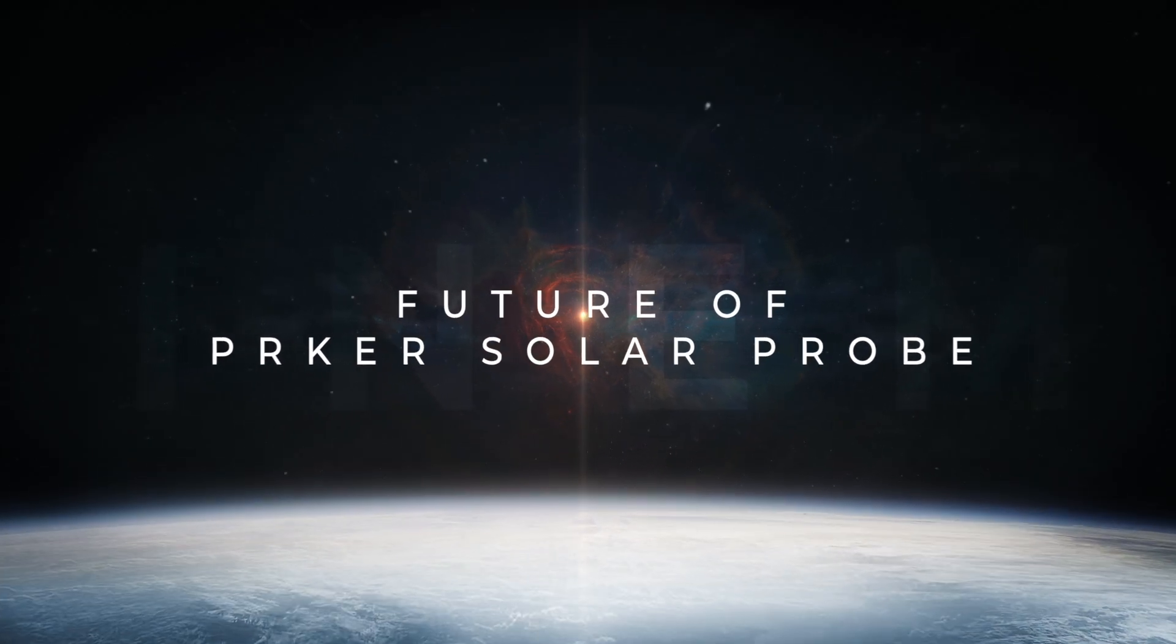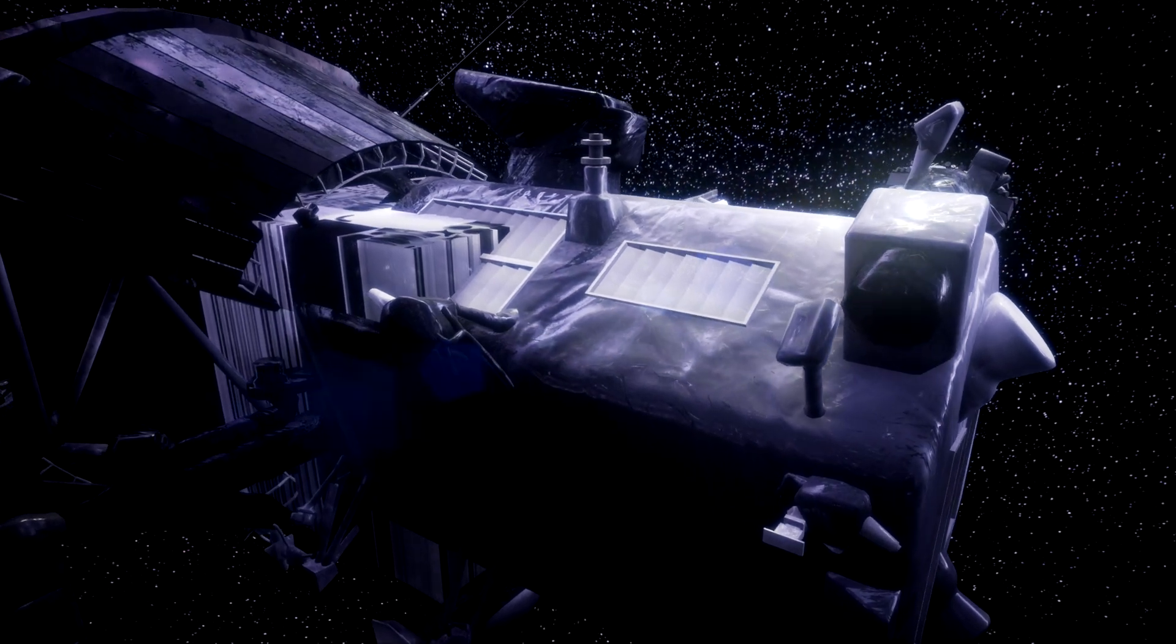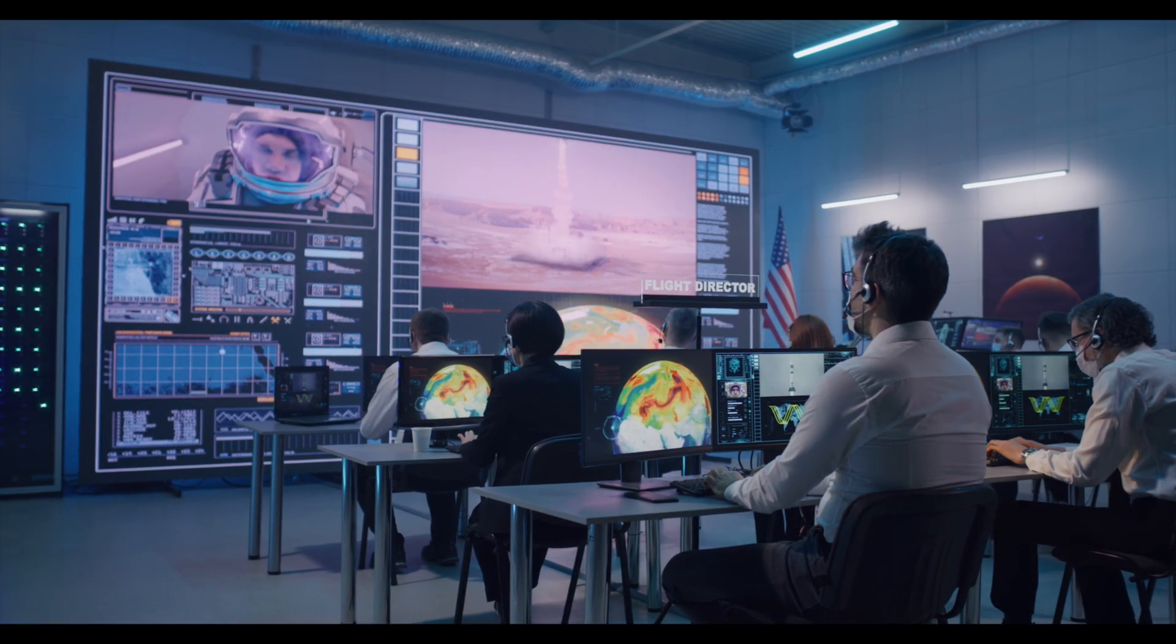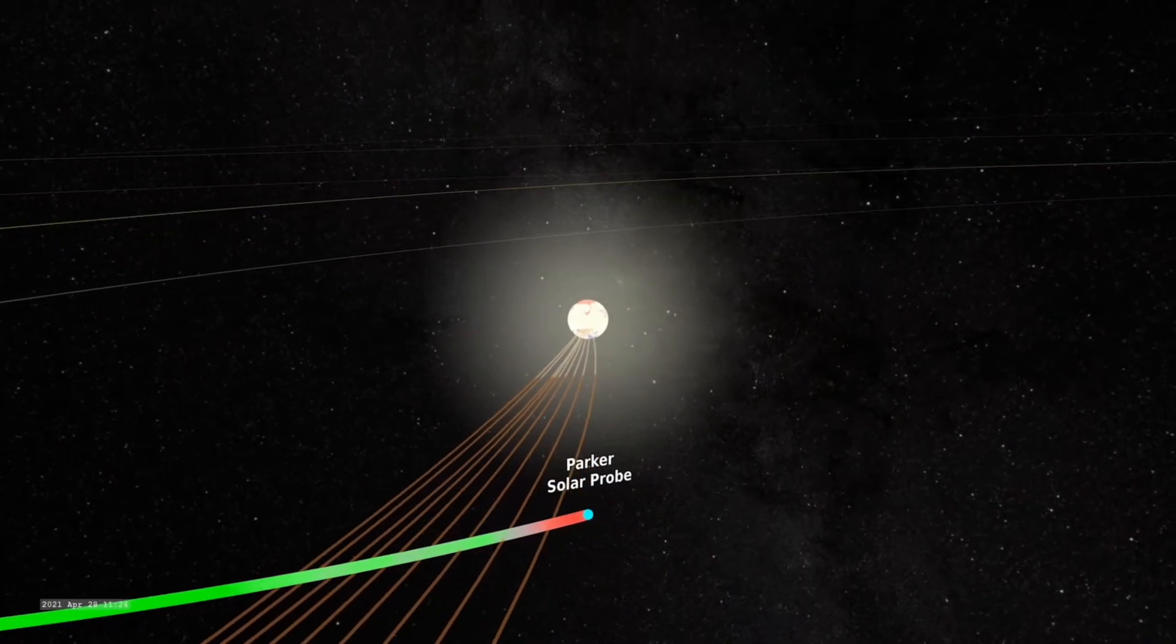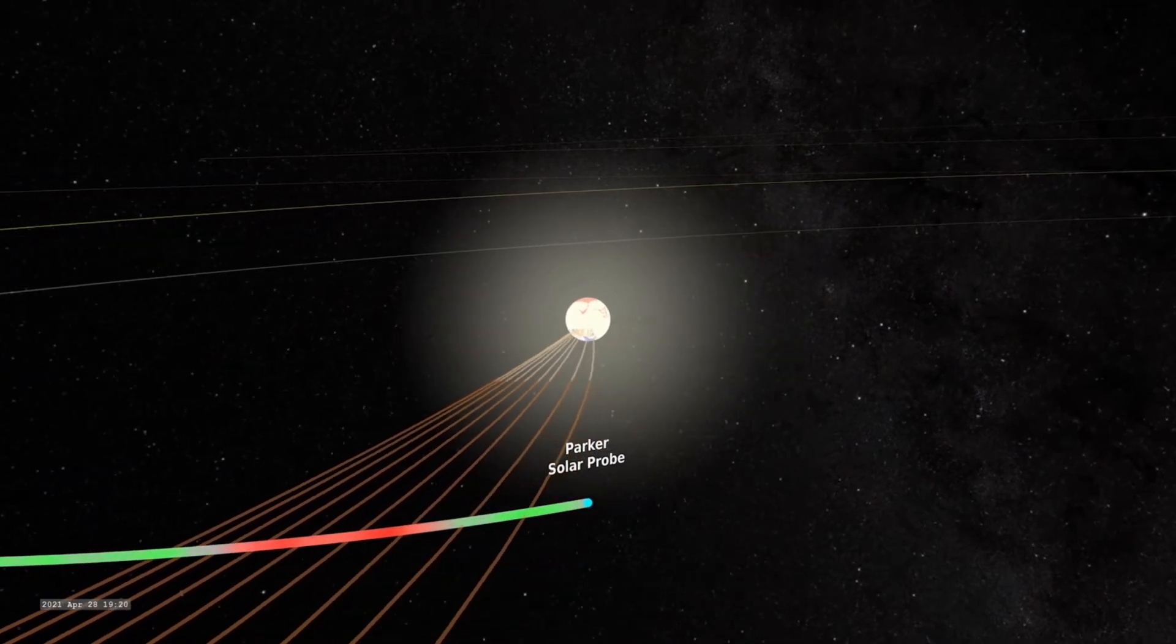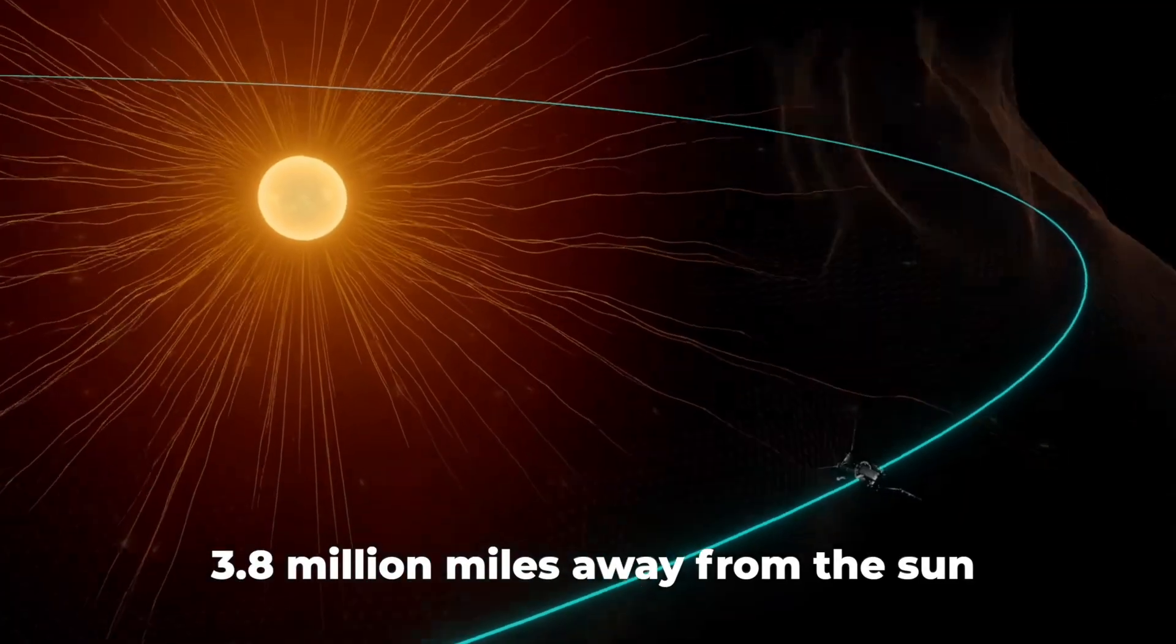Future of Parker Solar Probe. Even though the spacecraft has offered so much information already, there is still a lot of work that it needs to do. As planned by NASA, the solar probe will approach the sun around 24 times, and by 2025, it will be the closest to the sun than it has ever been, which will be only around 3.8 million miles away from the sun.